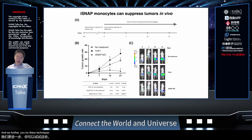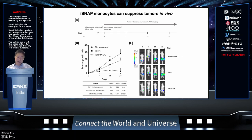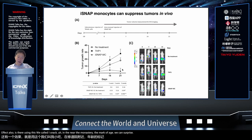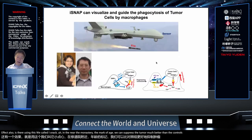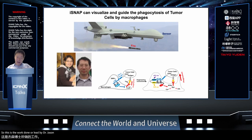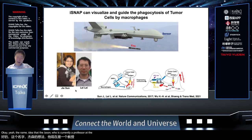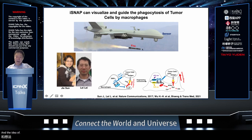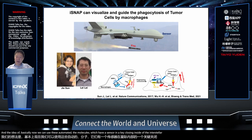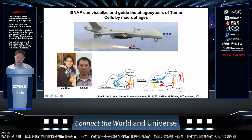We further utilized this technology for in vivo application, and can see the in vivo effect as well. Using what we call iSNAP-engineered monocytes and macrophages, we can suppress tumors much better than controls. This work was led by Dr. Jie Sung and Dr. Lei Lei — Dr. Jie Sung is currently a professor at Zhejiang University. The idea is that this automated molecule, acting as a sensor inside the cell, detects a signal and helps the cell fight and kill the tumor. We demonstrated this using macrophages to achieve this goal.